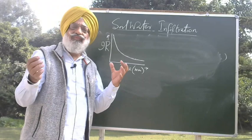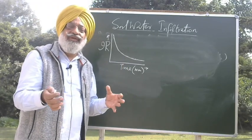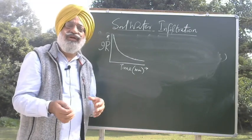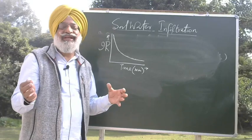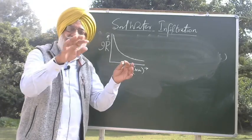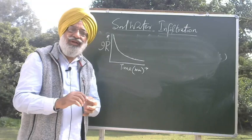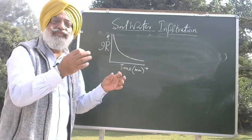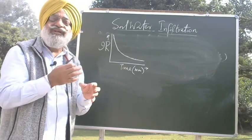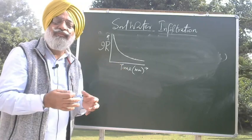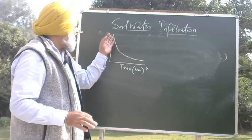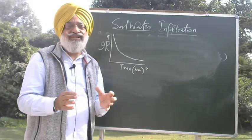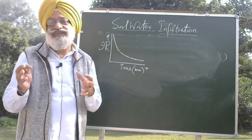Reason number two: initially, the dry soil is stable. When it gets wetted, some of the aggregates — particularly in coarse and medium texture soils — are not so strong, so those aggregates get broken down. The fine particles then clog the surface of the soil. So initially the infiltration rate is higher, and later on it decreases. These are basically the two reasons why infiltration rate decreases with time. This is a very important question asked in exams.